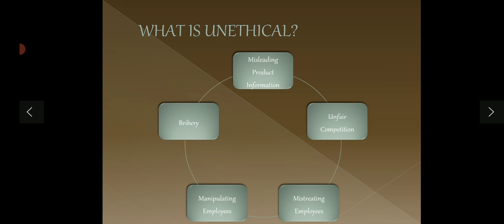A business should not engage in unfair competition. Large business organizations sometimes practice ways to abolish small businesses, which is wrong and not fair competition. Third: mistreating employees — manipulating them, not giving them fair salaries — all of this is unethical. And lastly: bribery. A business should not involve itself in bribery just to get work done; bribing another person is wrong. These are some major unethical practices in business, and we expect businesses not to pursue them, whether legal laws exist for them or not.